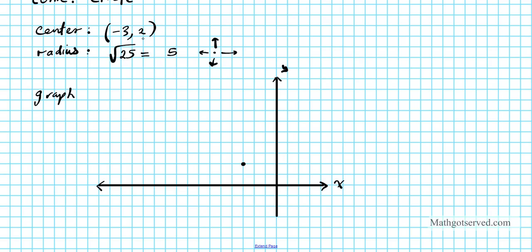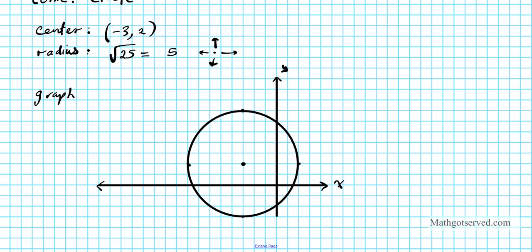To graph the extremities of the circumference, we move 5 units in all directions — north, south, east, and west — from the center. Mark those four points and draw a circle as best you can through those points. That's the graph of the circle.